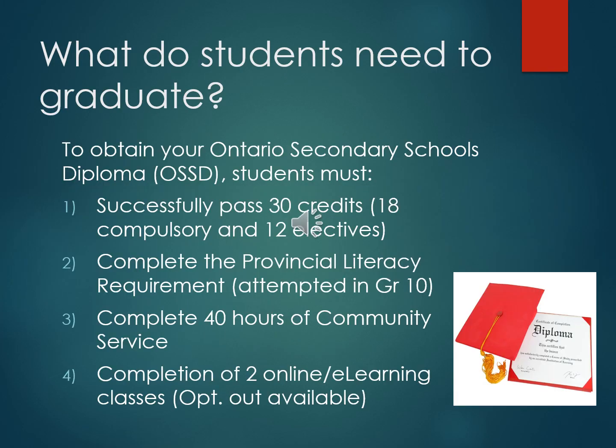Let's review graduation requirements. In order to obtain the Ontario Secondary School Diploma, you must successfully pass a total of 30 credits. These are made up of 18 compulsory credits and 12 elective credits. You must complete the provincial literacy requirement — this is attempting the literacy test in grade 10 and successfully passing, or taking the grade 12 Ontario literacy course and passing.